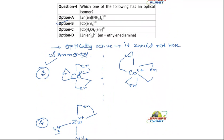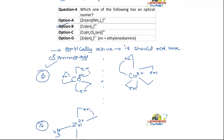So this is also not optically active. Now what about the fourth option? This is also symmetrical. Zn is at the center and we have got the ethylenediamine. This is also symmetrical—vertical axis of symmetry.